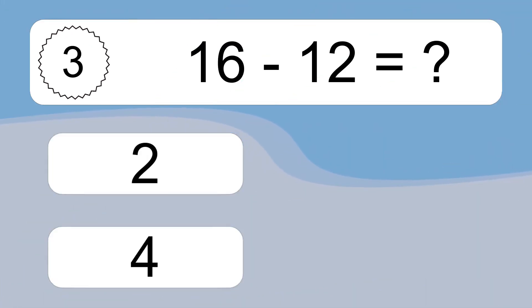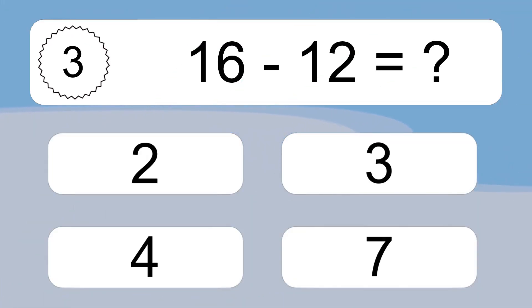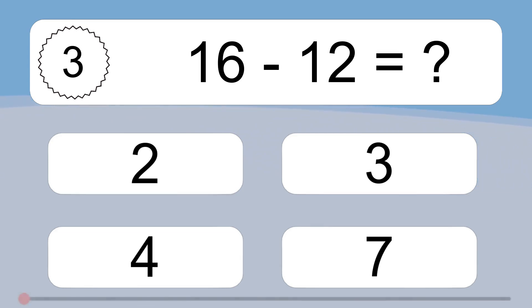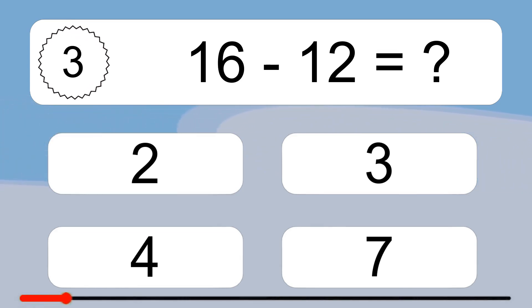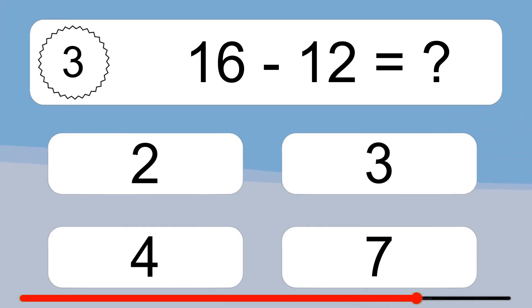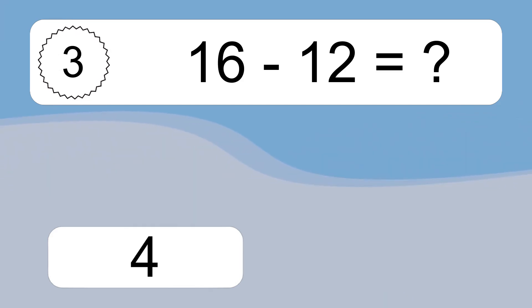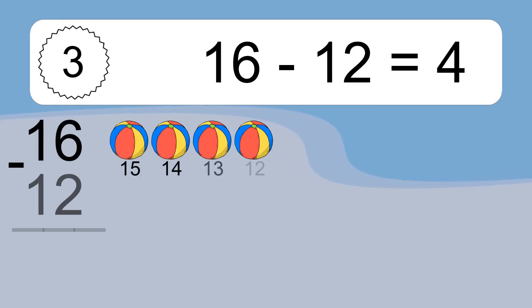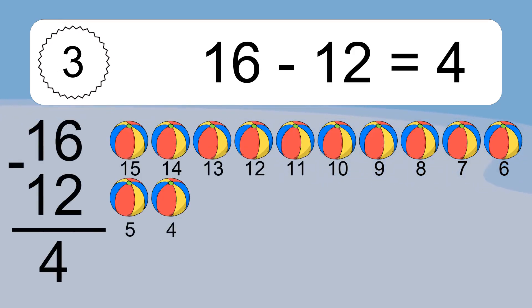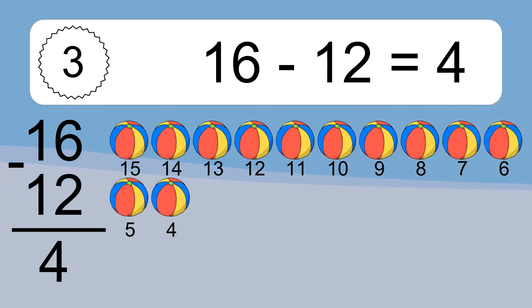16 minus 12 equals what? 16 minus 12 equals 4. Let's count it: 15, 14, 13, 12, 11, 10, 9, 8, 7, 6, 5, 4.